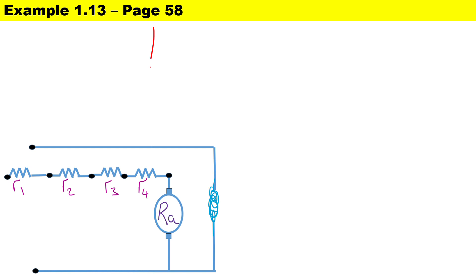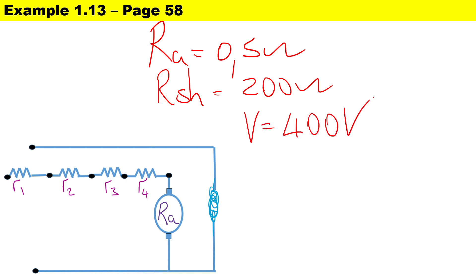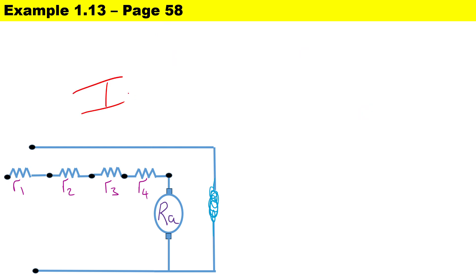Our known values are: Ra is the smaller resistance at 0.5 ohms, the shunt resistance is the bigger resistance at 200 ohms, and we have a terminal voltage of 400 volts. Note that in order to calculate Ia_max, it is 120% multiplied by the armature current — that is, 1.2 times Ia.